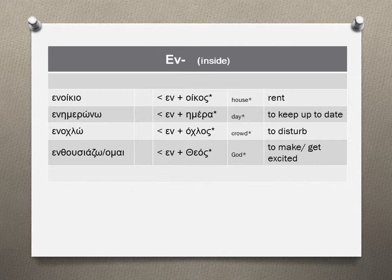Likewise, ENOHLIO is related to the word OHLOS, meaning CROWD or MOB. When we cause a disturbance to someone, we annoy him or her. Any clues about the word ENTHUSIASO? Does it remind you of the Greek word THEOS, meaning GOD? When we have God inside us, we experience a divine entrancement — we feel excitement. ENTHUSIAZO and ENTHUSIASMOS respectively mean to make someone or get ourselves excited about something or someone.